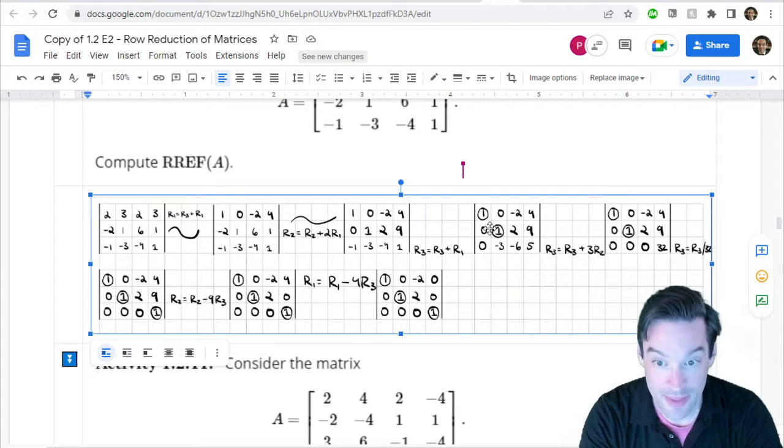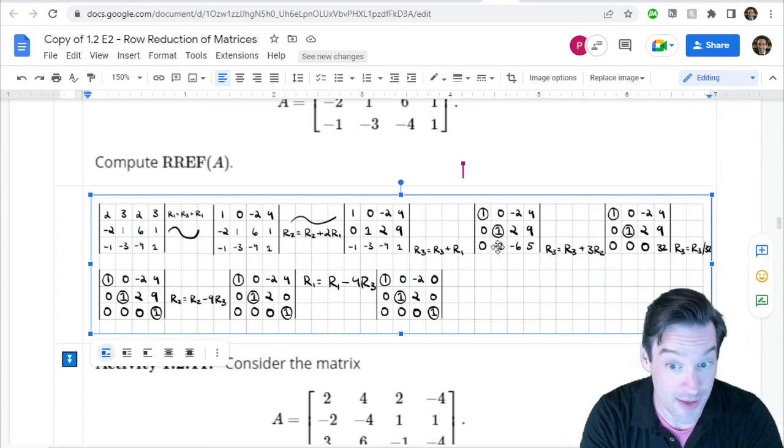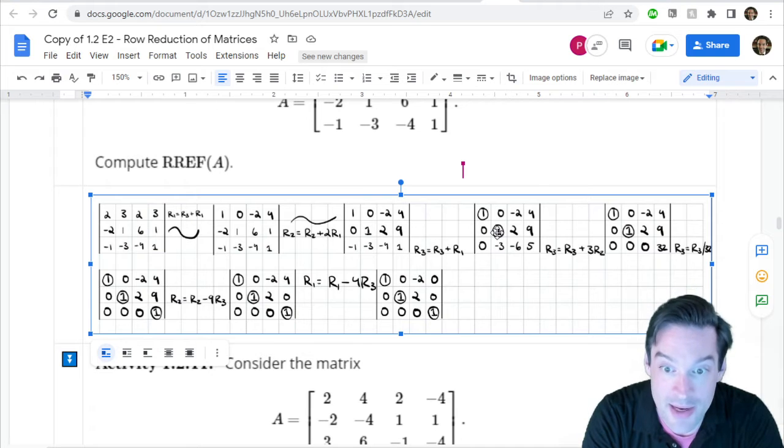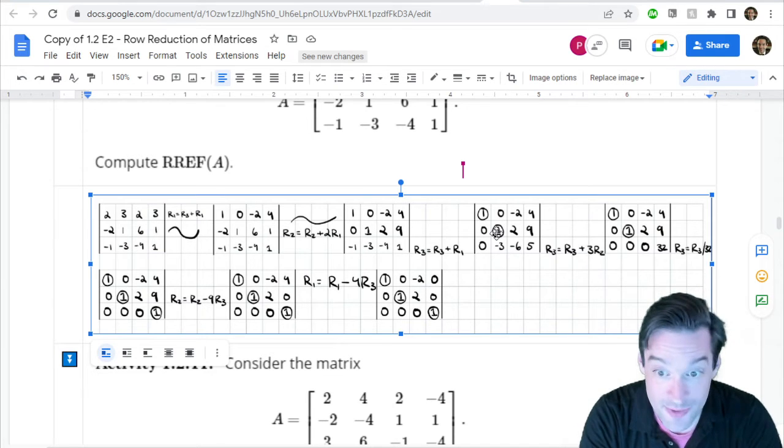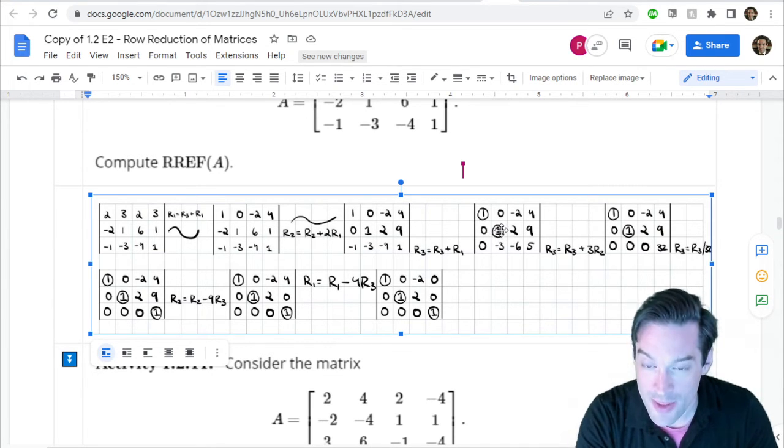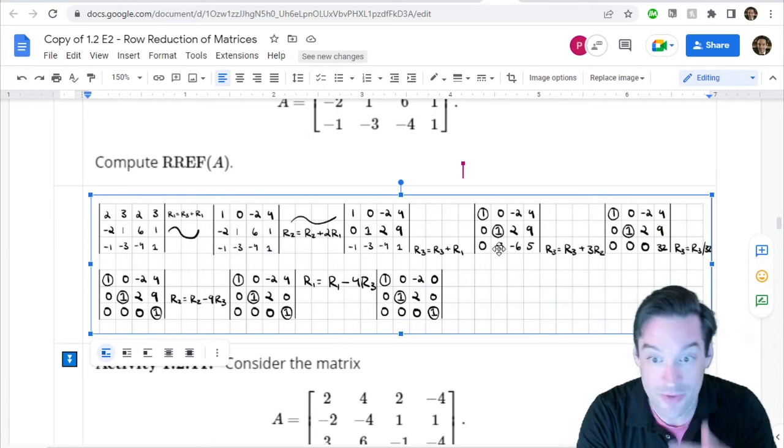And at the end of that, then the focus turned to the second column where we have the next hammer, the next one of our pivots. And already happens to be a one, which is kind of nice. We didn't have to do any hard work. And so then that one can be used to cancel the negative three that's underneath it.